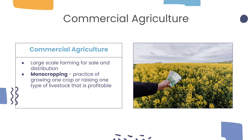What is commercial agriculture? Unlike subsistence agriculture, wherein small-scale farmers grow food crops to meet the needs of themselves and their families, commercial agriculture is large-scale farming for sale and distribution. In many cases, large-scale commercial agriculture revolves around monocropping, which is the practice of growing one crop or raising one type of livestock that is profitable.